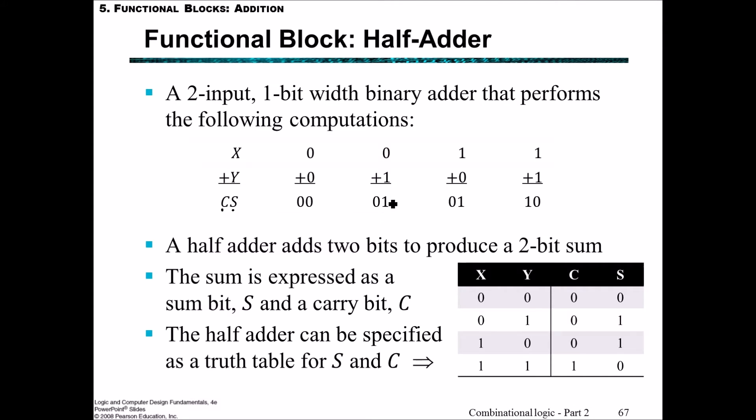Zero and one gives a sum of one but a carry of zero. In general, a half-bit adder adds these two bits to produce a two-bit sum expressed as the sum bit and the carry bit, S and C. The truth table on the right shows this half-adder at work.